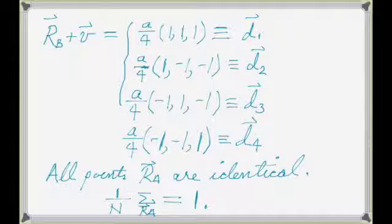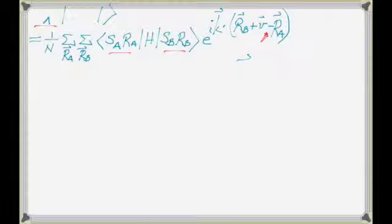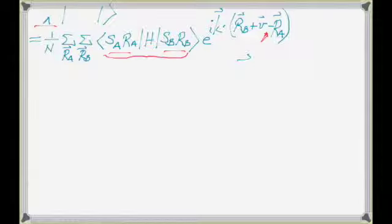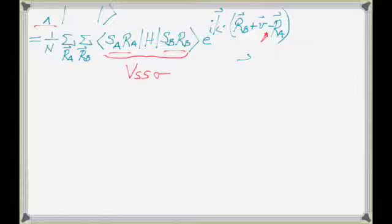For every one of these four B atoms, remember the matrix element between two S orbitals is not a function of the angle. So for all cases this is simply V_SS_sigma — that matrix element due to an S orbital on A and an S orbital on B. The orientation doesn't matter; the only thing that matters is their distance, and the distance is the same for all nearest neighbors.